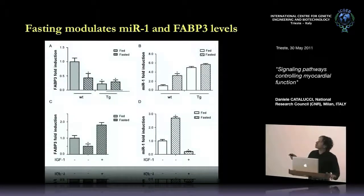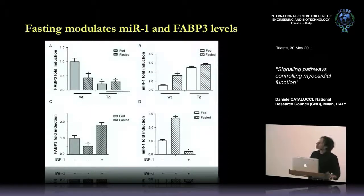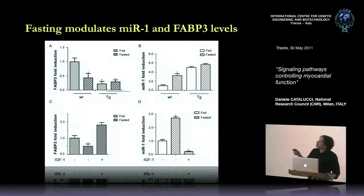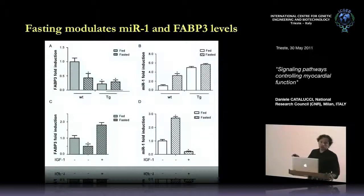Wild-type mice subjected to dietary restriction show a strong increase in myocardial miR-1 levels in biopsies, corresponding to a strong decrease in circulating FABP3. We performed the same analysis in transgenic mice overexpressing miR-1, but since miR-1 was already elevated, fasting these mice did not lead to big differences in FABP3 — though levels were still lower than in the wild-type condition as expected.